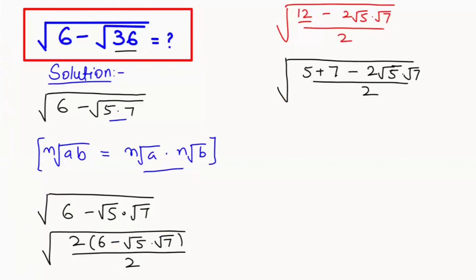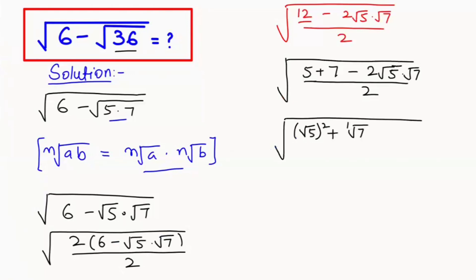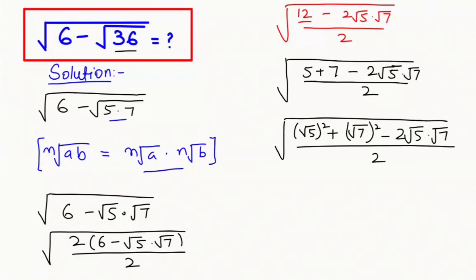Now I'm going to express this 5 and 7 in this form: root of 5 whole to the power of 2. If I cancel this out, I will get the same value of 5. Plus root of 7 whole to the power of 2, minus 2 root of 5 times root of 7, over 2.